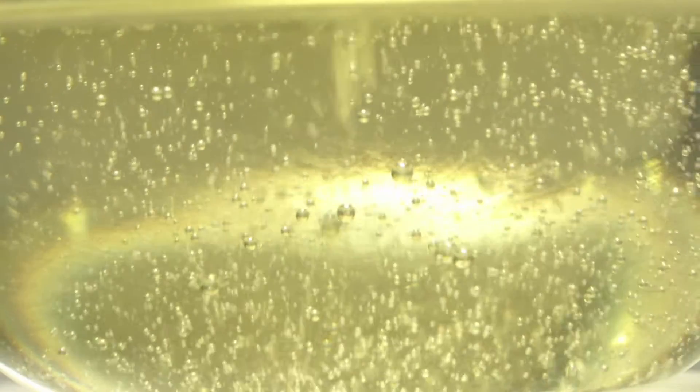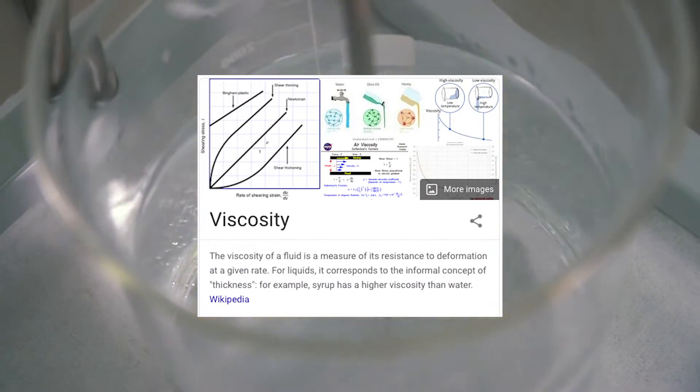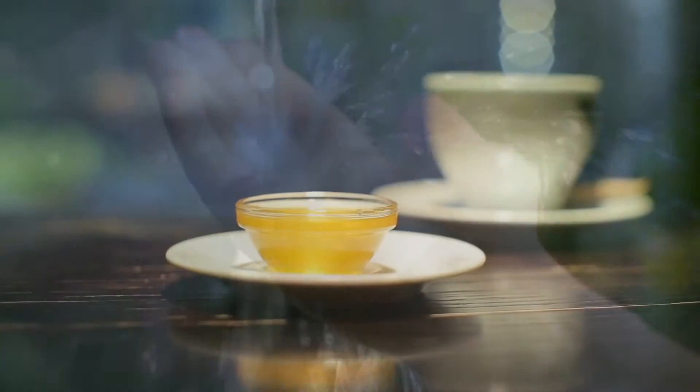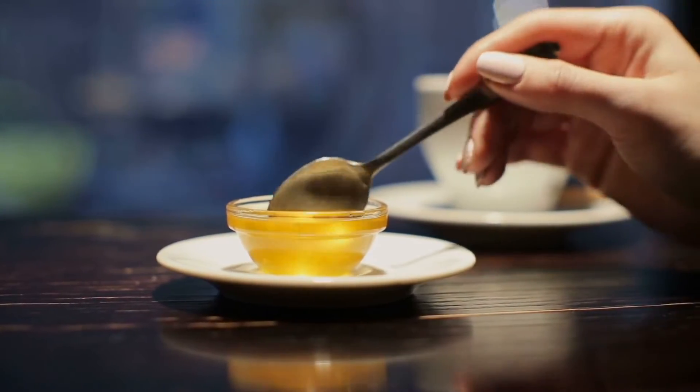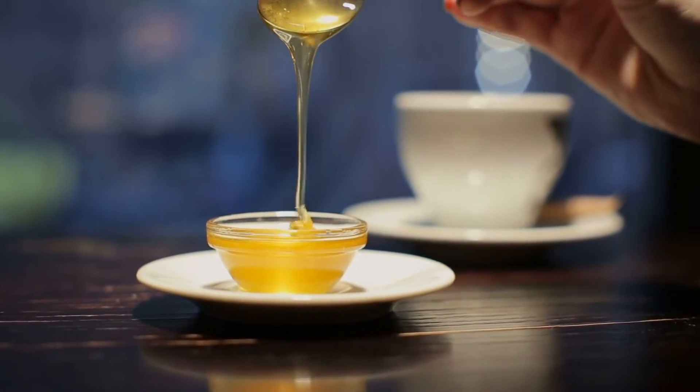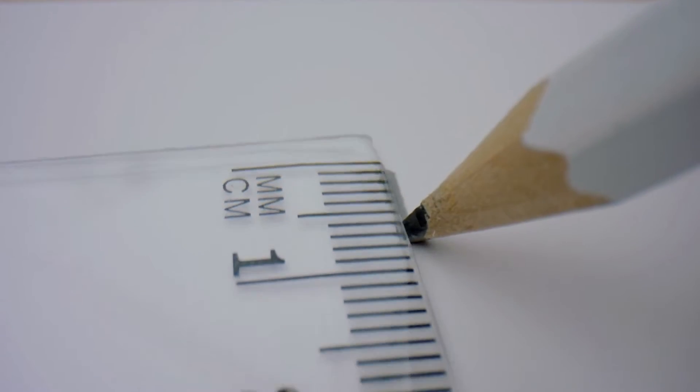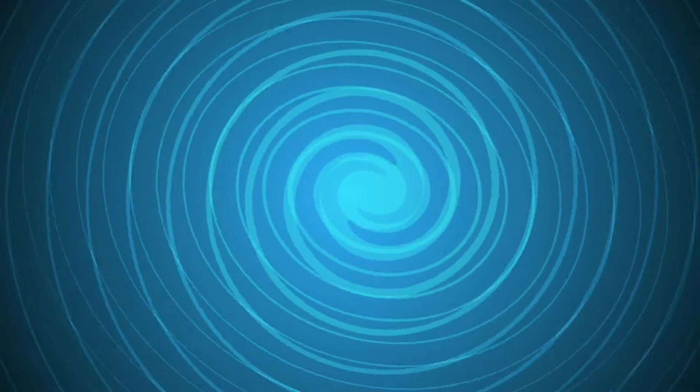Fluids can also be viscous or non-viscous. Think of this like thickness. Viscous fluid flows slowly, and non-viscous fluid pours easily. Honey flowing through a pipe would look a lot different compared to water flowing through a pipe. That's the difference in viscosity. Fluid flow can also be rotational or irrotational. Irrotational means straight lines and rotational means swirling.